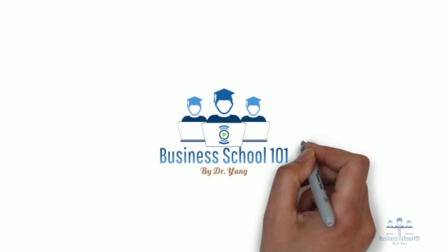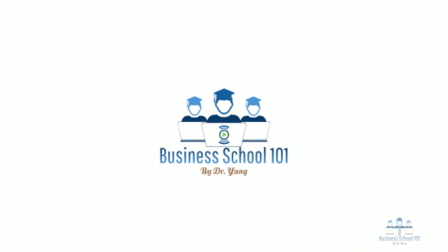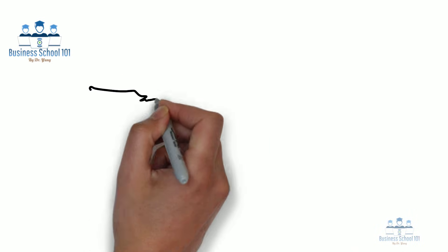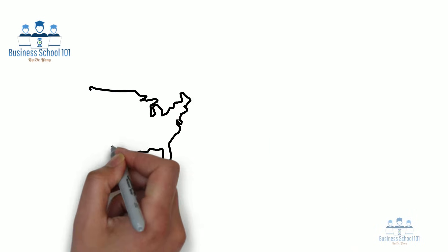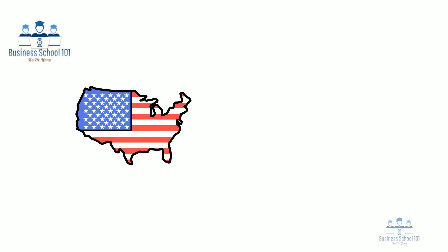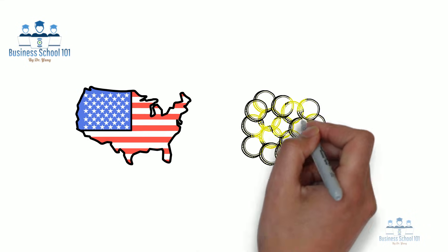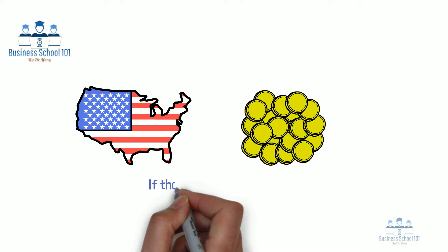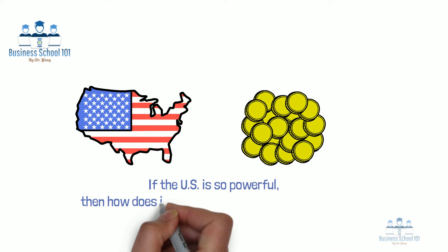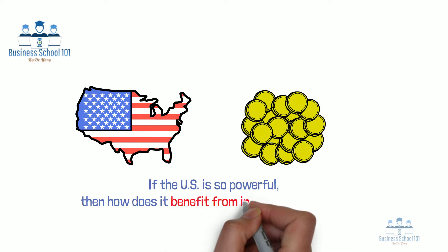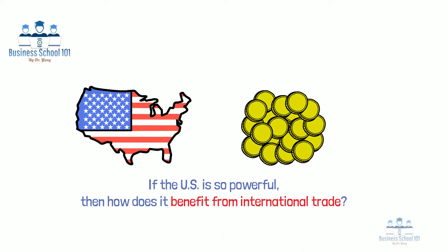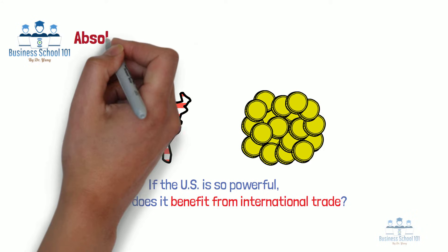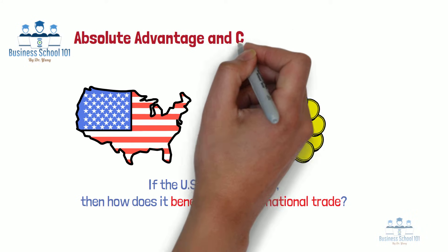Hello, everyone. Welcome to Business School 101. The United States is one of the wealthiest nations in the world, yet we continue to trade with other countries. Have you ever considered why this is the case? If the U.S. is so powerful, then how does it benefit from international trade? To answer this question, we need to understand two important terms in the international business field: the absolute advantage and the comparative advantage.